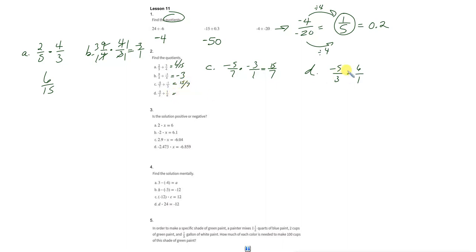Last one. Keep change flip over here. Negative multiplied by a positive, so this is going to be a negative result. Diagonally, we have a common factor of 3 here, so let's knock that out. 5 times 2 is 10, and 1 times 1 is 1. So, we end up with negative 10, or negative 10 over 1, which is the same thing. Booyah!